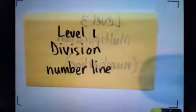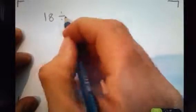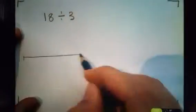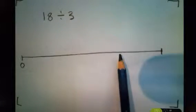Level one division on a number line. Let's try 18 divided by 3. Basically, you're going to see how many threes you can jump before you get to 18. How many threes can you fit into the number 18? That would be your answer. Pause the video and have a go.